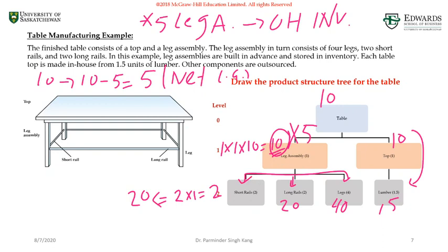Let's look into the requirements for children at level two. We need two short rails for one leg assembly, but now based on new net requirements, we only need five leg assemblies. So I need now 10 short rails.